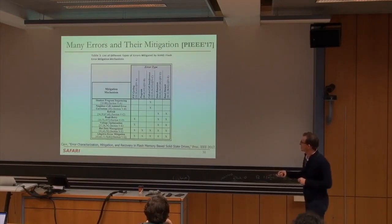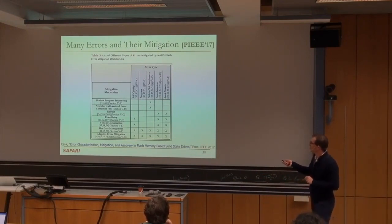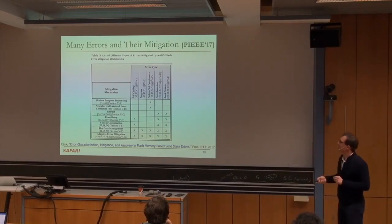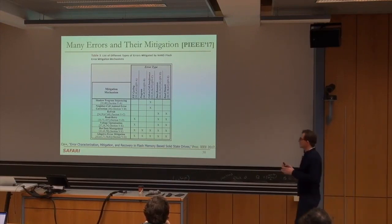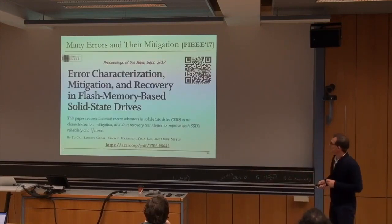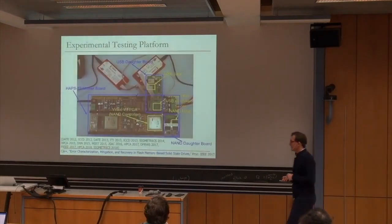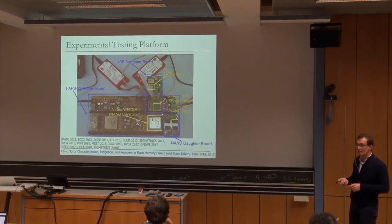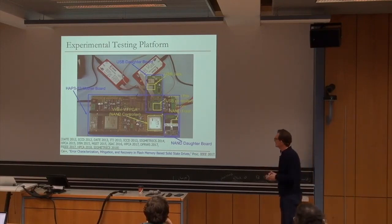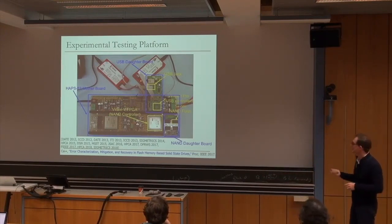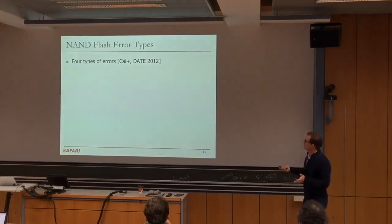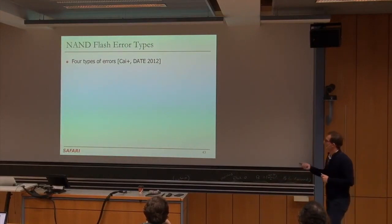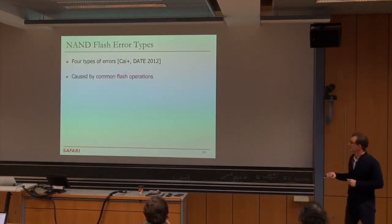The experimental characterization methodology uses an enhanced flash controller with a flash translation layer inside an FPGA — a similar infrastructure to what we built for DRAM. We characterize four types of errors, three of which are caused by common flash operations. This initial incarnation of our infrastructure allows us to precisely measure threshold voltages of individual cells, enabling detailed modeling of how errors arise and evolve over the flash memory's lifetime.